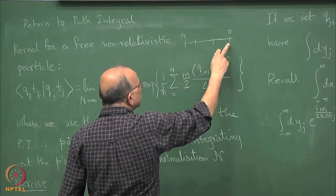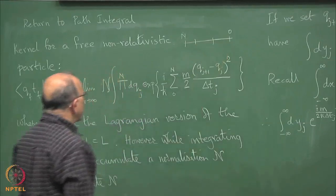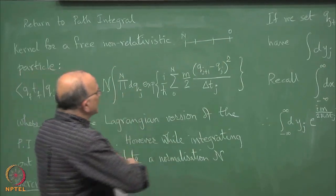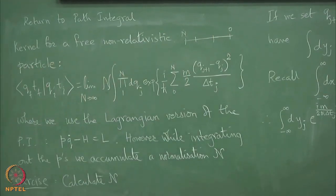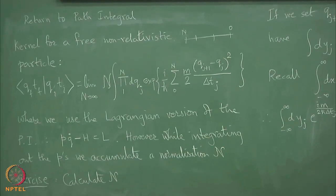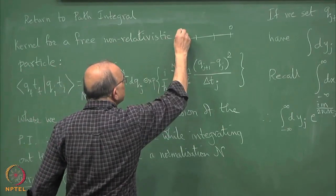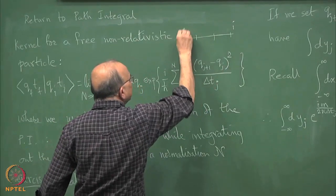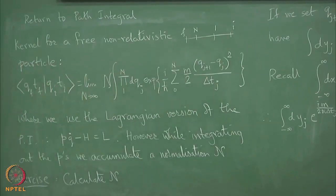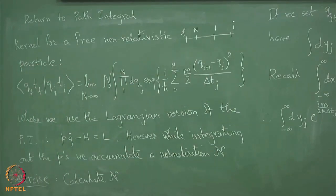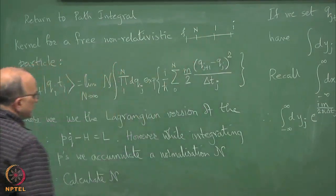If I have 3 differences, then there are 4 points. In other words, this integration goes over only the interior points, but then there are more differences. There is also q_{j+1}. So this is actually n+1 — if this is i and this is f, then it is 1 to n in between. The number of slices: i and f are fixed, so the number of intervals is one more than the number of integration variables.